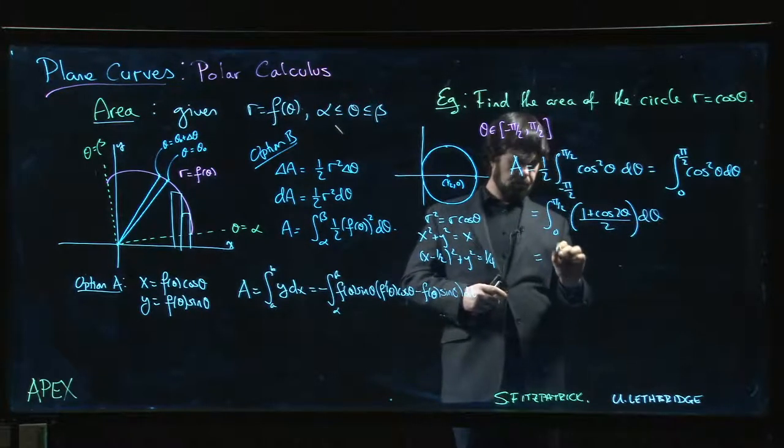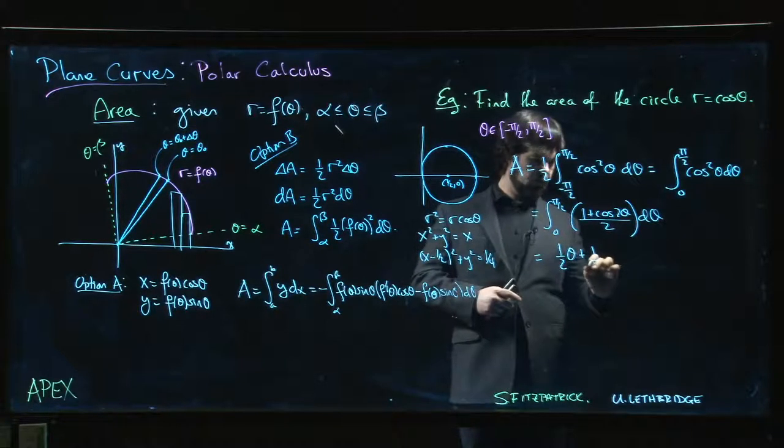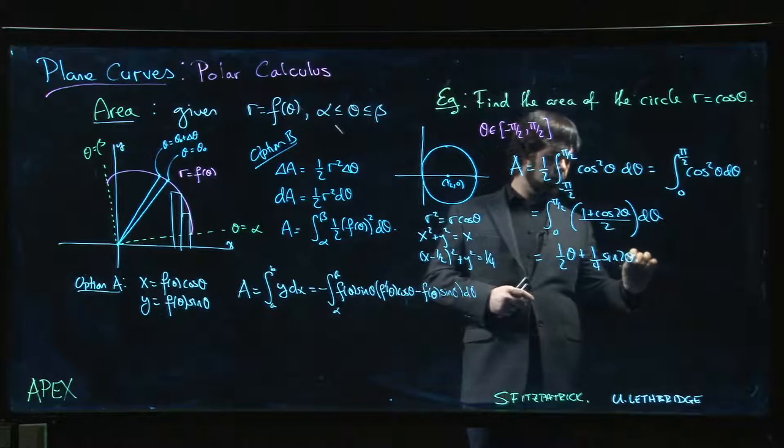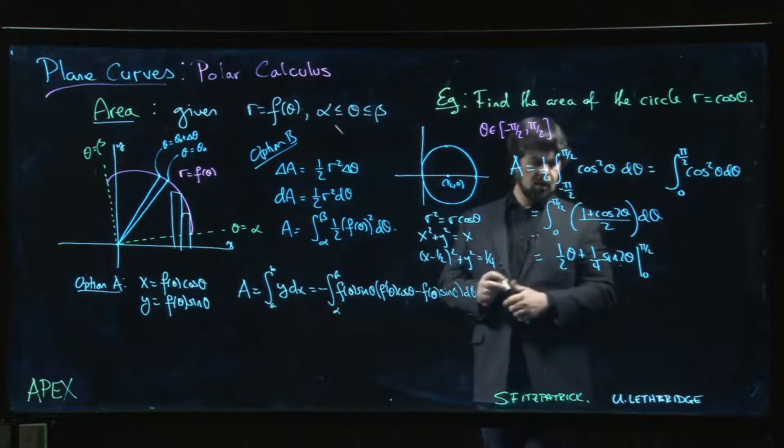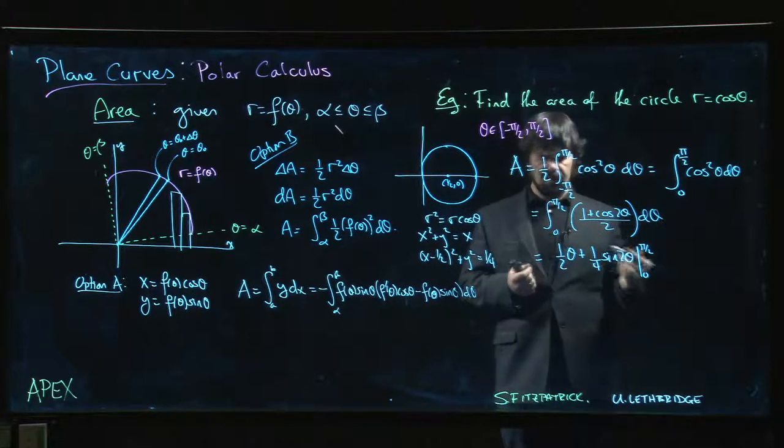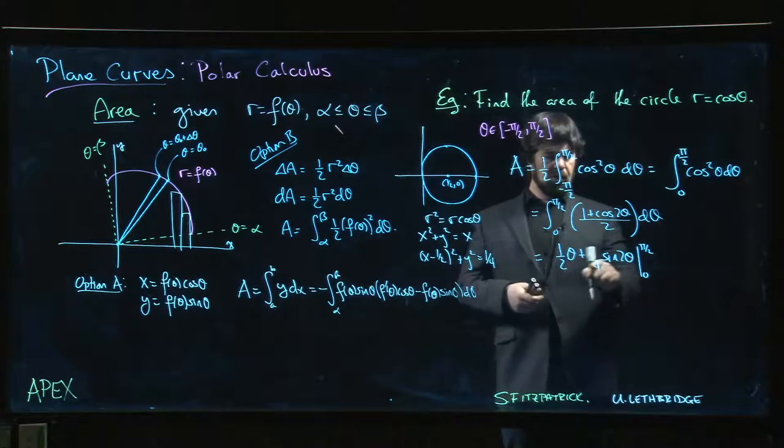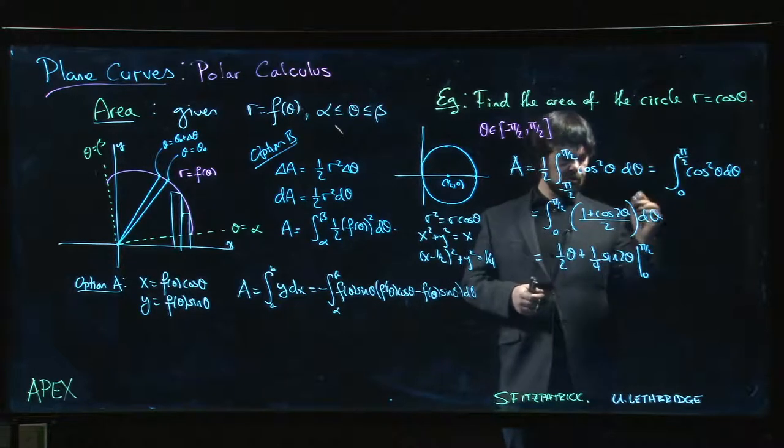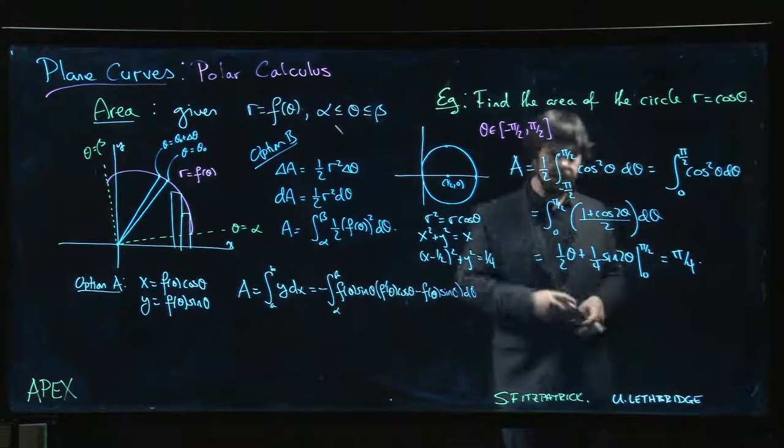So we get 1 half theta plus 1 quarter sine 2 theta from 0 to pi over 2. And the sine term doesn't contribute to anything, as is often the case with these. Because sine of 0 is 0, sine of pi is 0. So we just get 1 half times pi over 2. We get pi over 4, as expected.